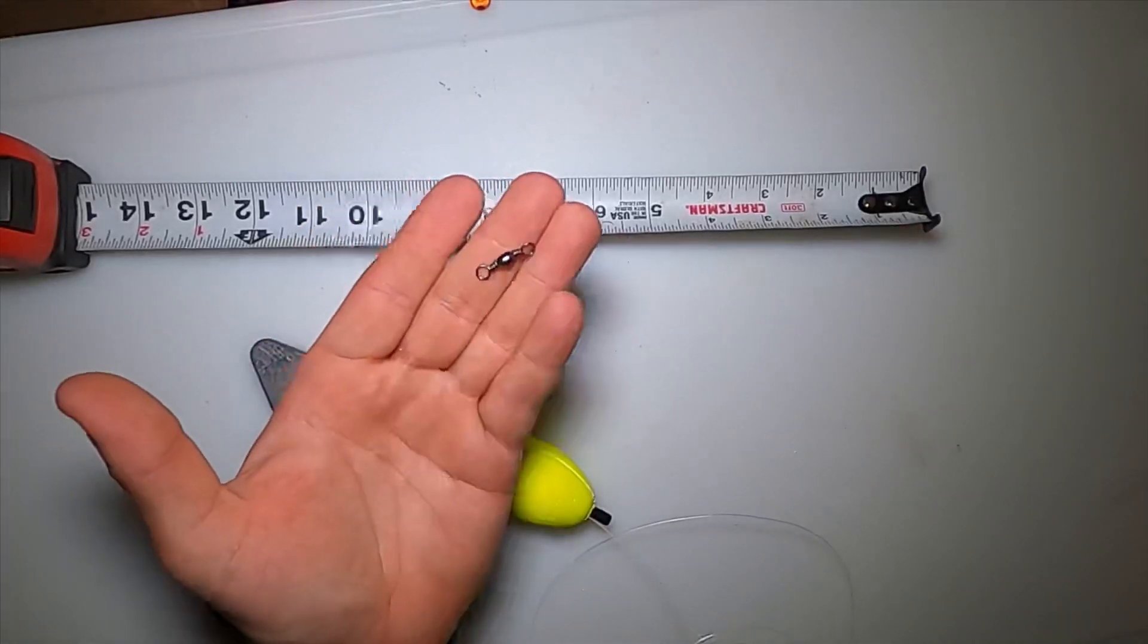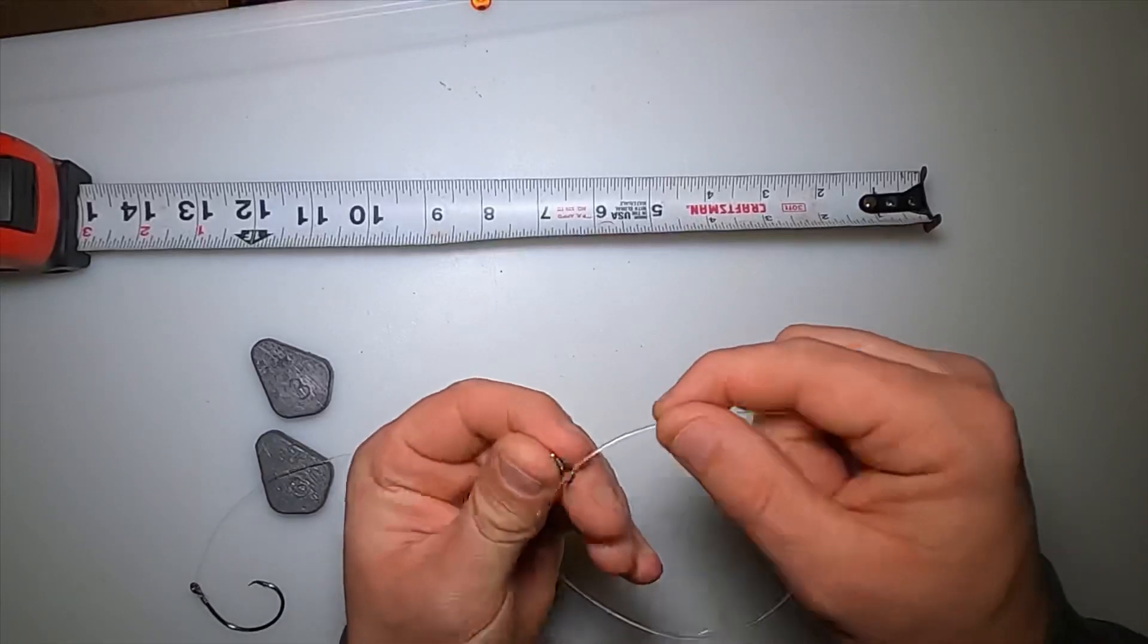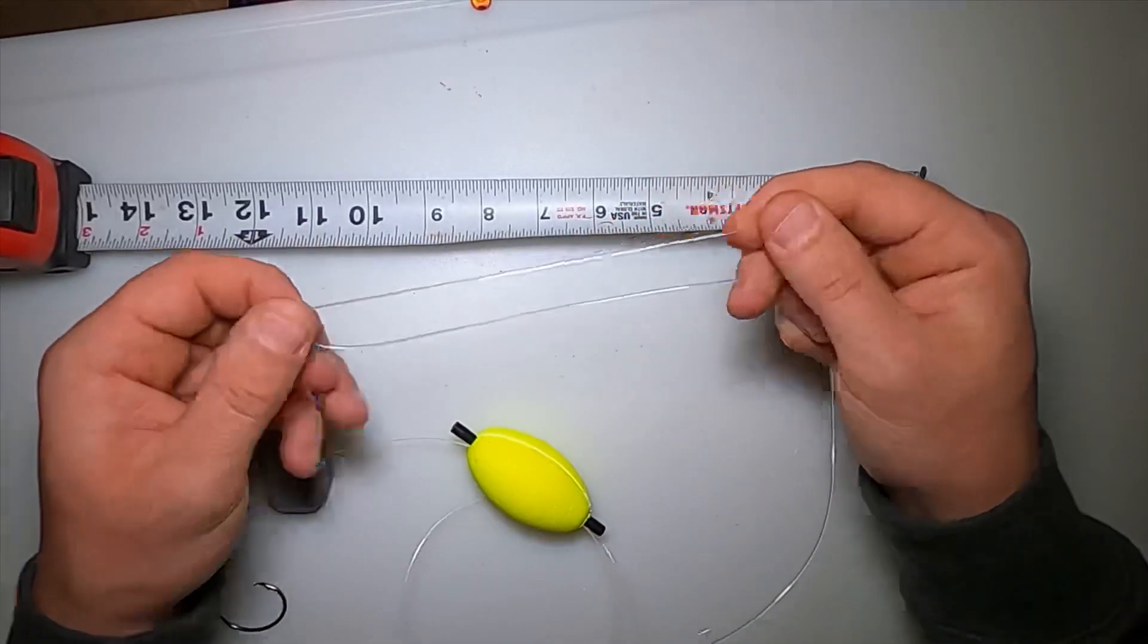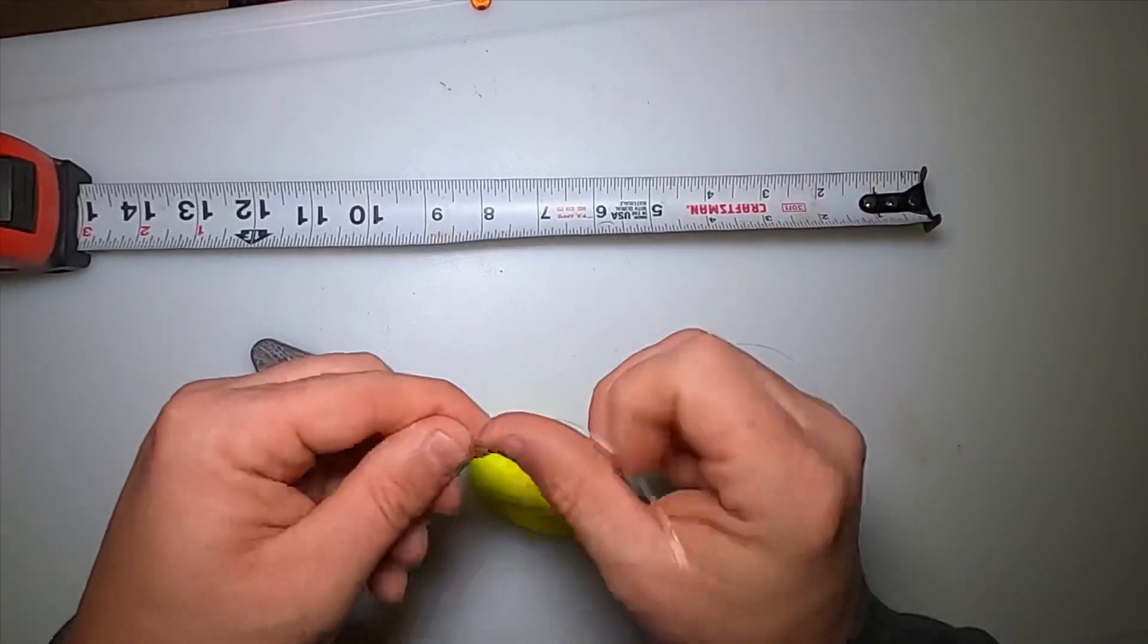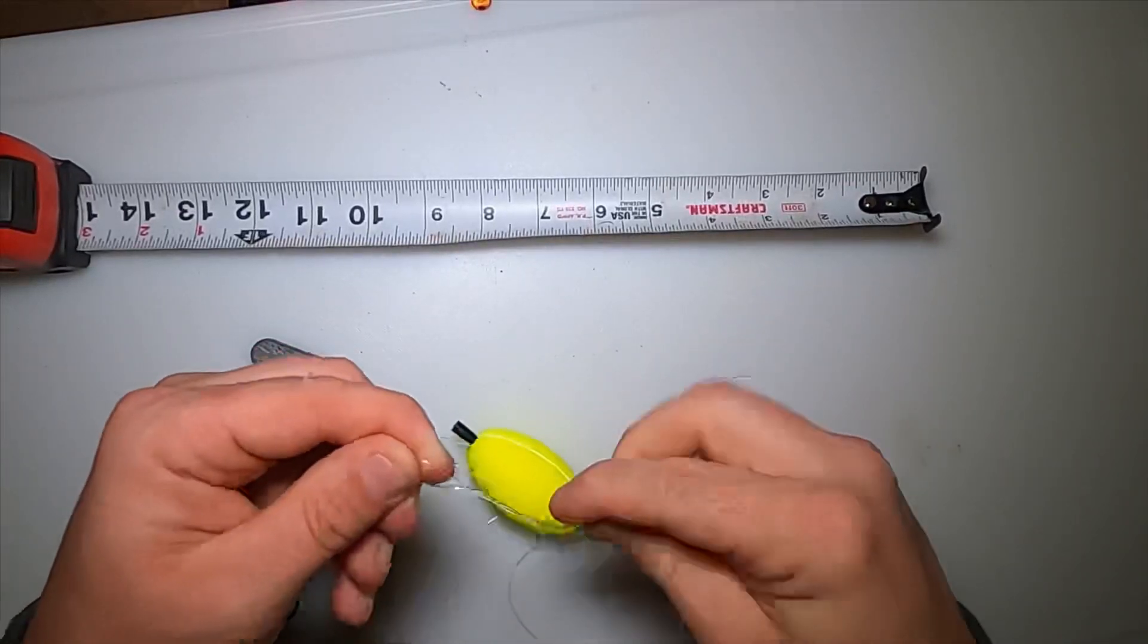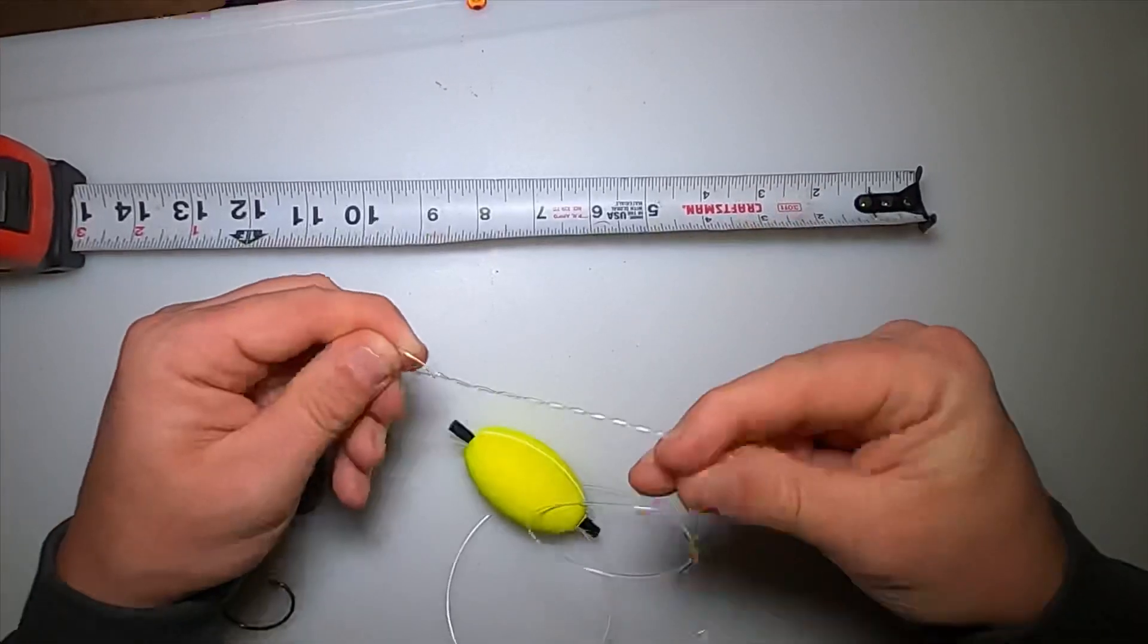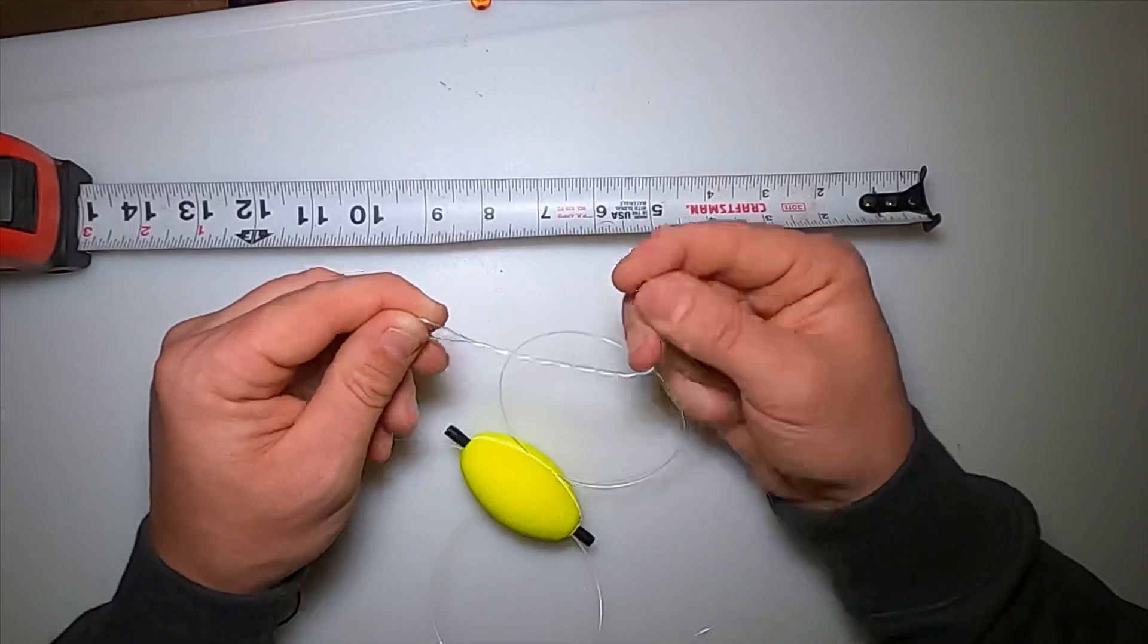Then you can use just a regular swivel, not a three-way. It's rated for about 110 pounds too. I'm going to take about six to eight inches of line up here, wrap it around seven or eight times.